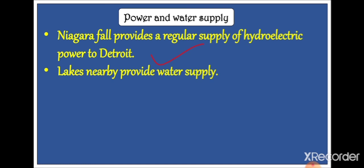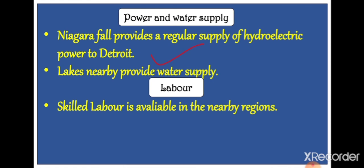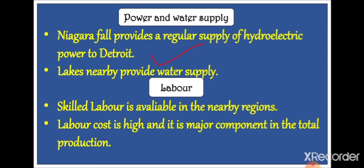For power supply, Niagara Falls provides a regular supply of hydroelectricity to Detroit. For water supply, Lake Superior, Lake Huron, and Lake Erie all provide a good supply of water. Regarding labor: skilled labor is available from nearby regions, and laborers come to Detroit to work in the iron and steel as well as automobile industries. However, the labor cost in Detroit is high compared to TISCO in Jamshedpur, which adds to the production cost and increases product prices.